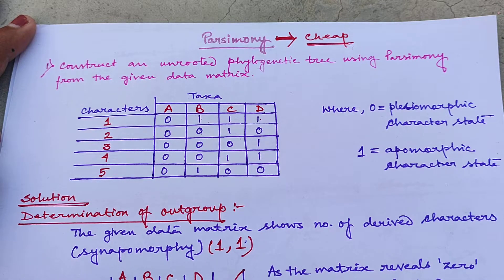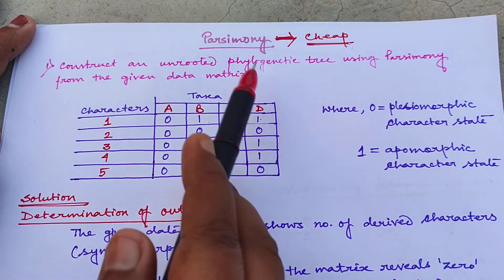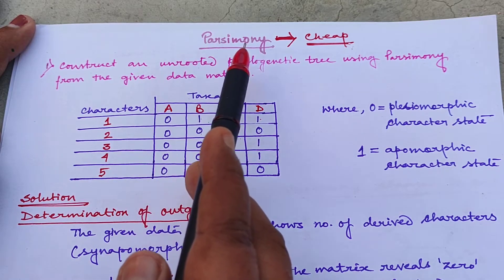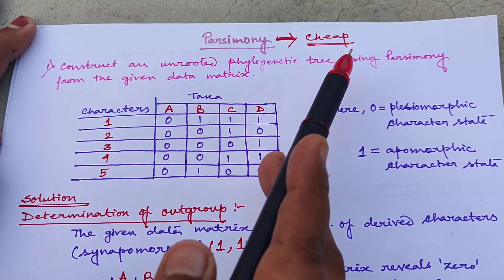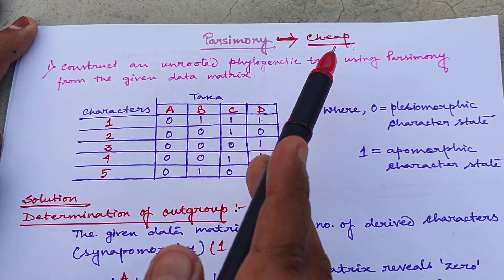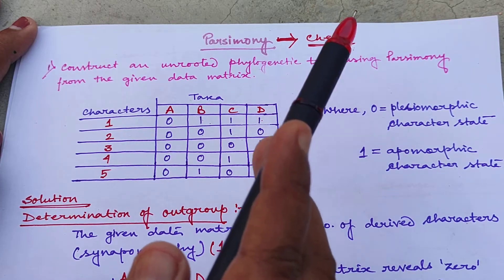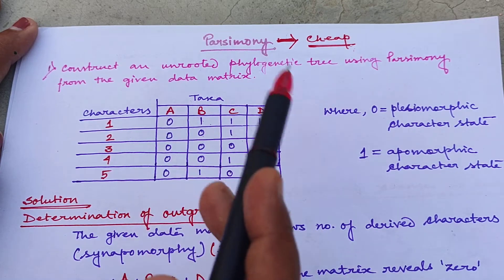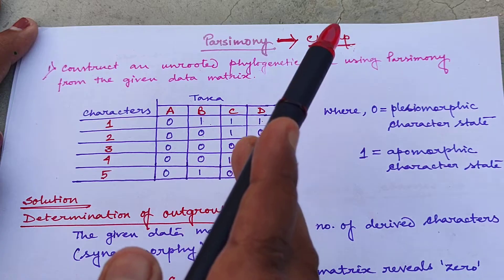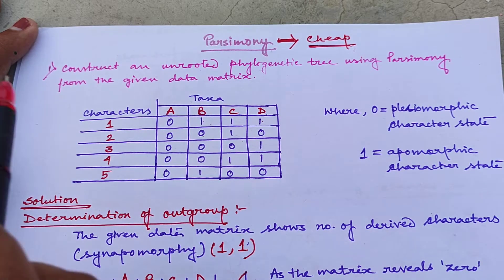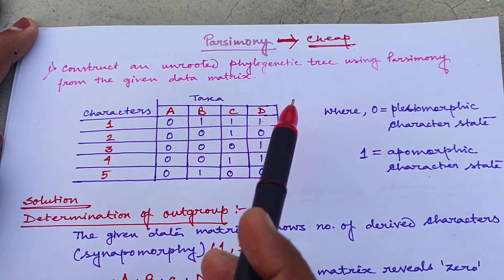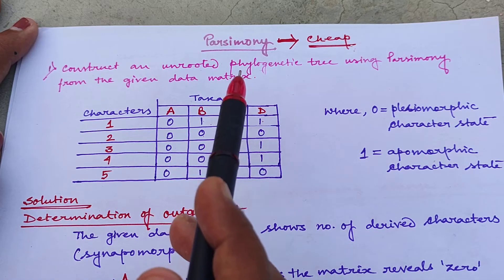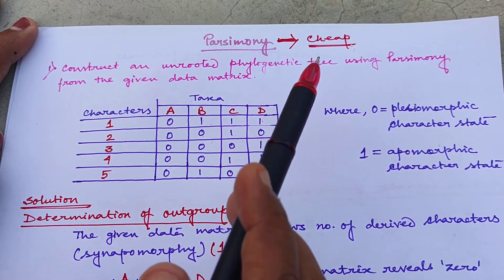Based on shared derived character states or synapomorphic character state we have to construct a maximum parsimonious tree or phylogenetic tree. The word parsimony means cheapness. Whenever a new species forms from any old species, nature tries to keep the mutation number or the number of evolutionary changes as least as possible. Nature does not like a higher number of mutations, so nature shows cheapness in that sense. That is why this type of tree construction is known as a parsimonious tree.